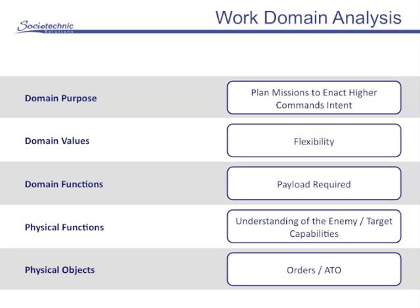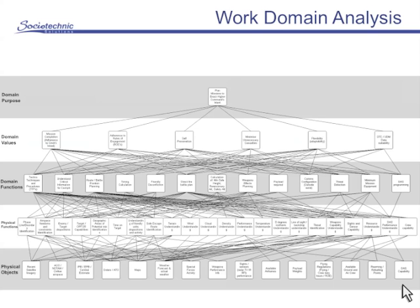We take all this information and plot it in a large diagram. It may seem a little overwhelming at first, but it will become clearer. We see that there are many domain values, many domain functions, many physical functions, and many physical objects. However, at the top we have our single domain purpose. This is specific to this domain — in this case, the only reason the system exists is to plan missions to enact higher commands and intent.